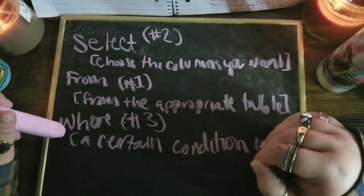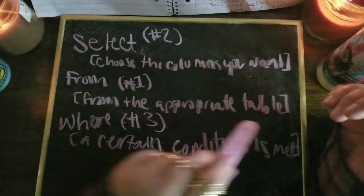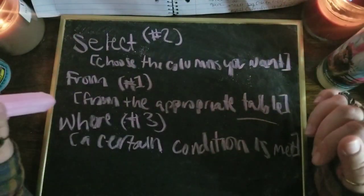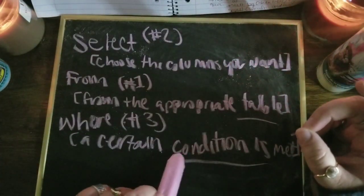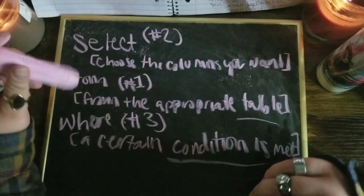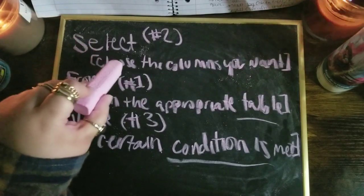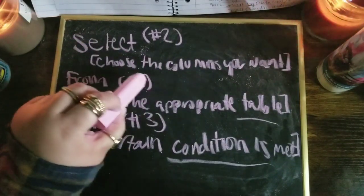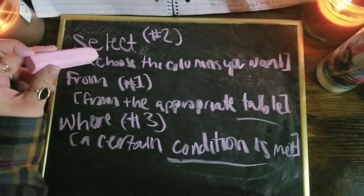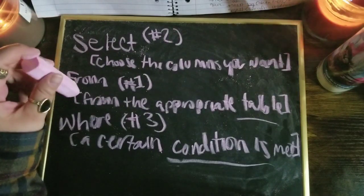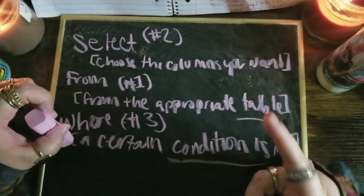The syntax in which you write your query starts big, looking for the table, and then it gets smaller and more specific with certain conditions and criteria being met. So you start with SELECT — you're choosing the columns that you want. This is where we start. And then you look for that information FROM this table. And then any specifics that you're looking for. I'll give you an example.